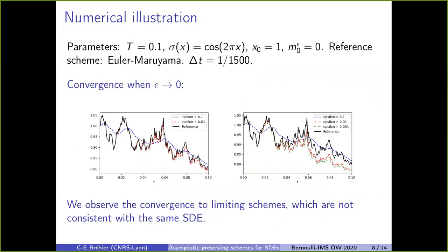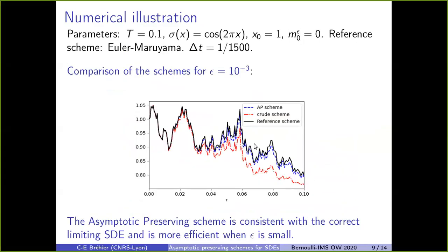I now want to present a very fast numerical simulation. First, I show that when Epsilon goes to zero we can have convergence to a limiting scheme. In black we have a reference scheme, which is Euler-Maruyama for the SDE written in Ito form. On the left, it is for the good asymptotic preserving scheme, and on the right it is for the first naive scheme. We observe convergence when Epsilon goes to zero, but not to the same quantity. In blue, the asymptotic preserving scheme is very close to the reference scheme, while in red the bad scheme is not asymptotically consistent.